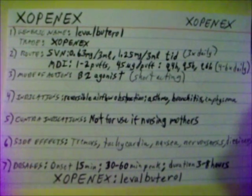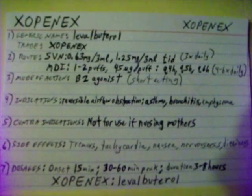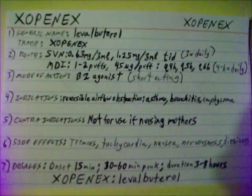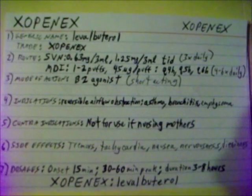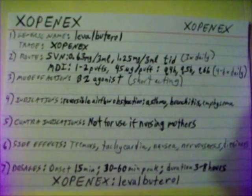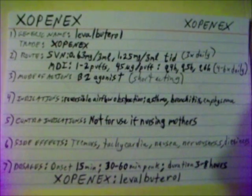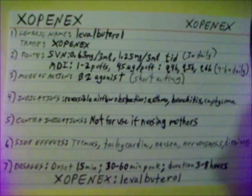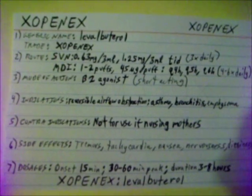Xopenex — Levalbuterol — can also be given as an MDI, 1 to 2 puffs of 45 mcg per puff, given Q4H, Q5H, or Q6H — every 4, 5, or 6 hours. Mode of action of Xopenex: it is a B2 agonist which causes dilation of smooth breathing muscle.